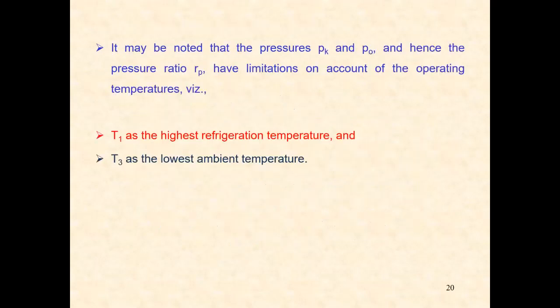It may be noted that the pressures PK and P0, and hence the pressure ratio RP, have limitations on account of the operating temperatures, where T1 is the highest refrigeration temperature and T3 is the lowest ambient temperature.